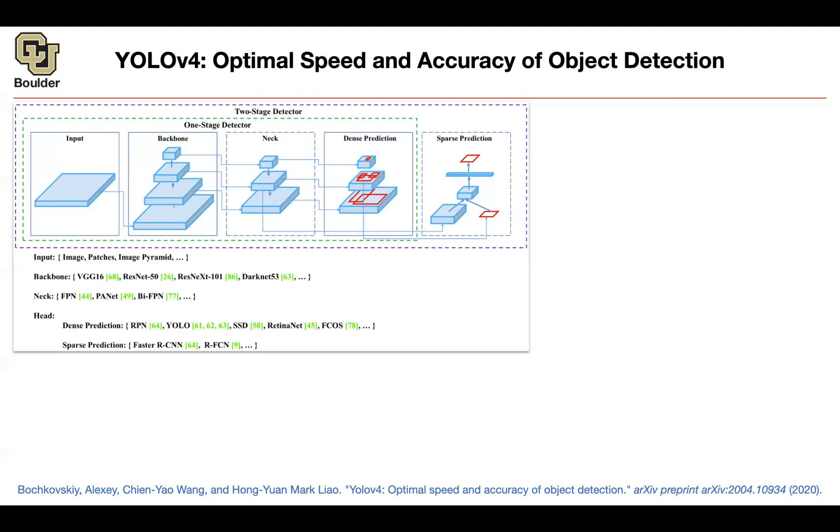But actually, this figure is very interesting. It's going to give us a big picture of the type of topics we have covered so far. You're going to have two major classes of object detectors. Some of them are one-stage, some of them are two-stage detectors.